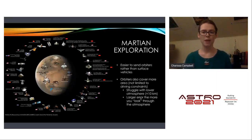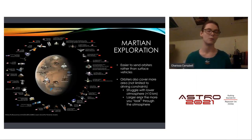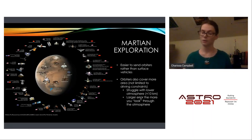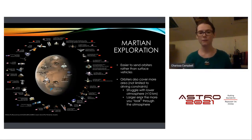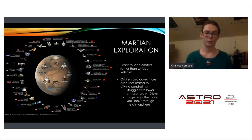More orbiters have been sent to Mars than surface vehicles because orbiters are easier — they don't require entry, descent, or landing. Orbiters also cover more area without driving constraints. However, they struggle with the lower atmosphere: any altitudes less than 10 kilometers are very difficult for an orbiter to see through. Surface vehicles are therefore really well-suited for examining that lower atmospheric region.